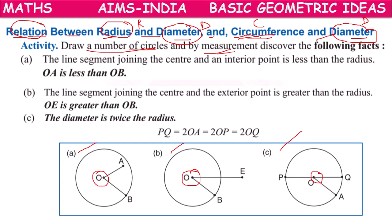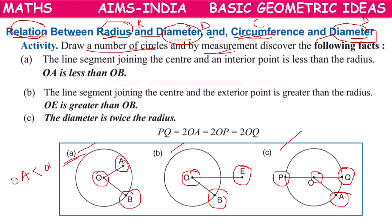Point B is on the boundary of the circle, point A is in the interior part of the circle, and point E is in the exterior part of the circle. From the first diagram, the distance OA is less than the distance OB; the line segment joining the center to an interior point is always less than the radius.